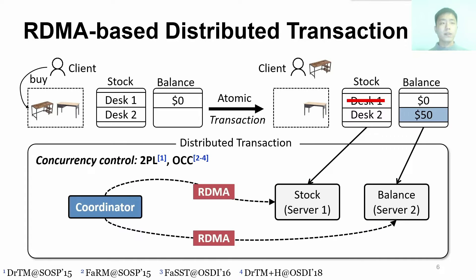Recent studies leverage RDMA to process distributed transactions. Specifically, the coordinator issues RDMA requests to access remote data. Concurrency control schemes, such as two-phase locking and optimistic concurrency control, or OCC, are leveraged to serialize transactions.